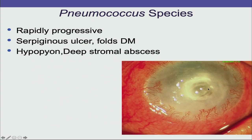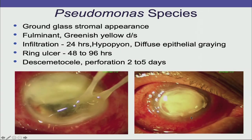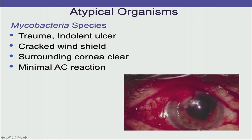A rapidly progressive serpiginous ulcer with Descemet membrane folds, hypopyon, and deep stromal abscess is most likely pneumococcal. If there is a ground-glass stromal appearance, fulminant course, greenish-yellow discharge, infiltration within 24 hours, ring ulcer at 48 hours, and descematocele or perforation within 2–5 days, it is most likely a pseudomonas ulcer.